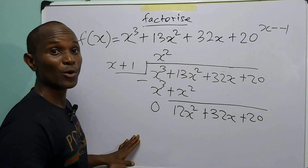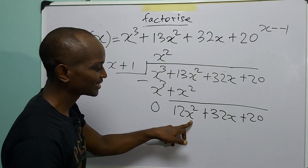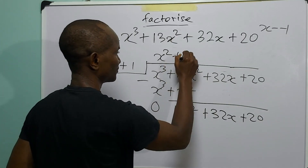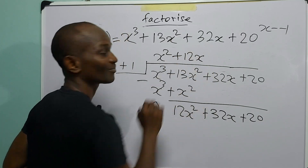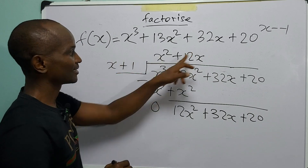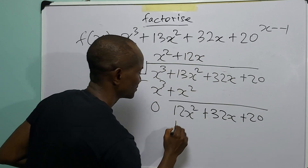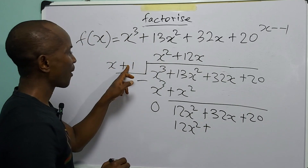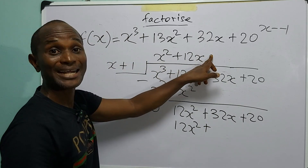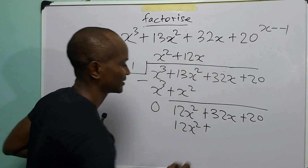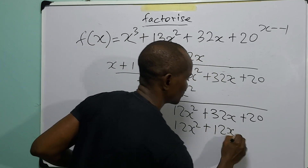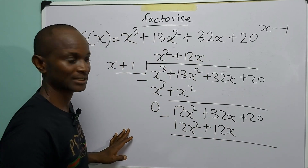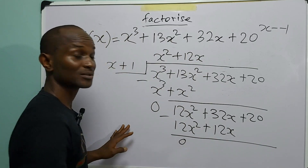We continue: 12x² divided by x is 12x. Then 12x multiplied by (x + 1) gives 12x² + 12x. Subtracting, this is equal to 0 for the x² terms, and we continue with the remaining terms.